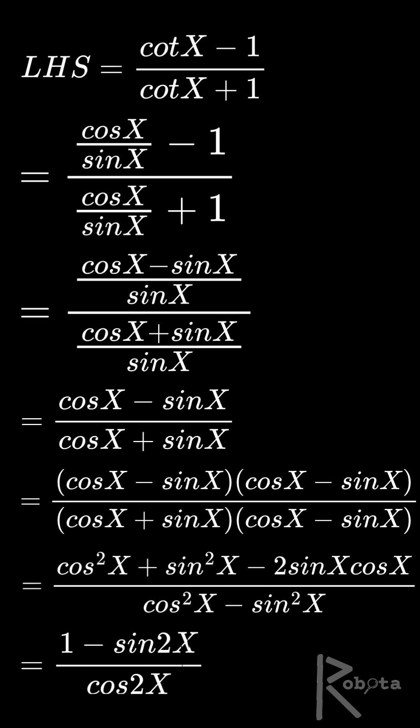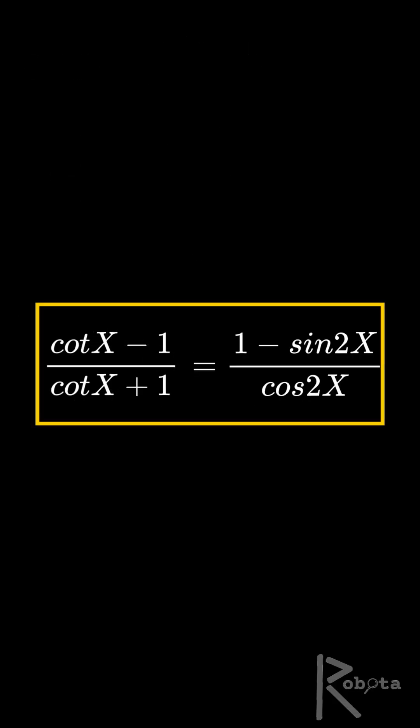And that gives 1 minus sine 2x over cos 2x exactly what we wanted. Proof done.